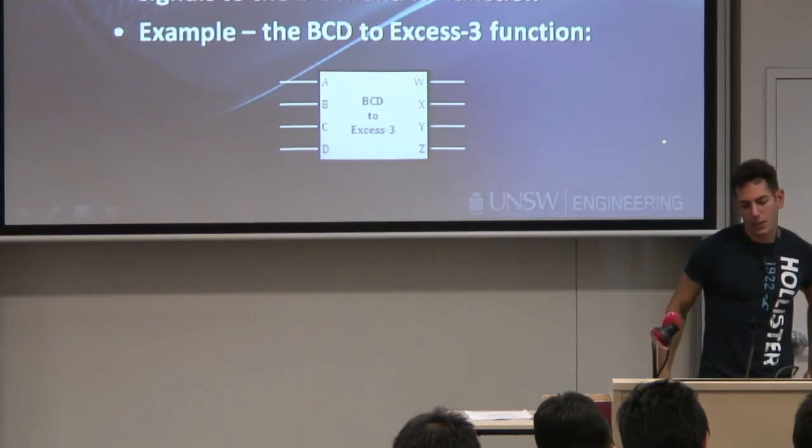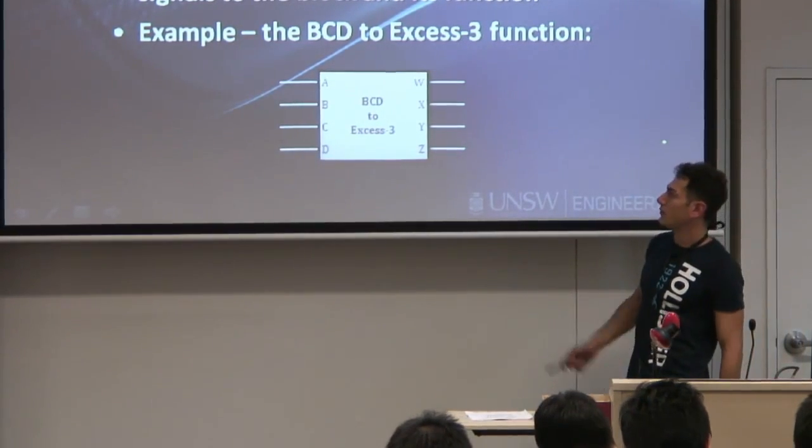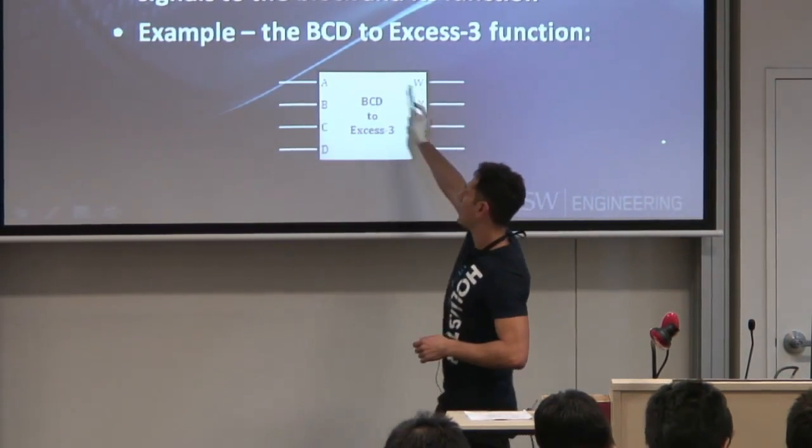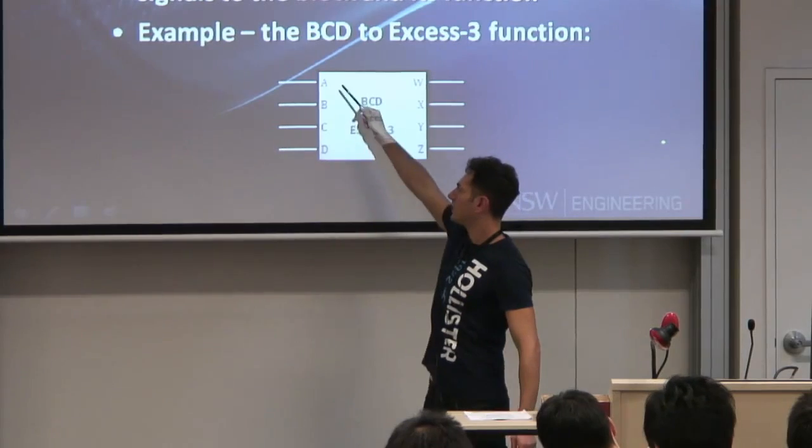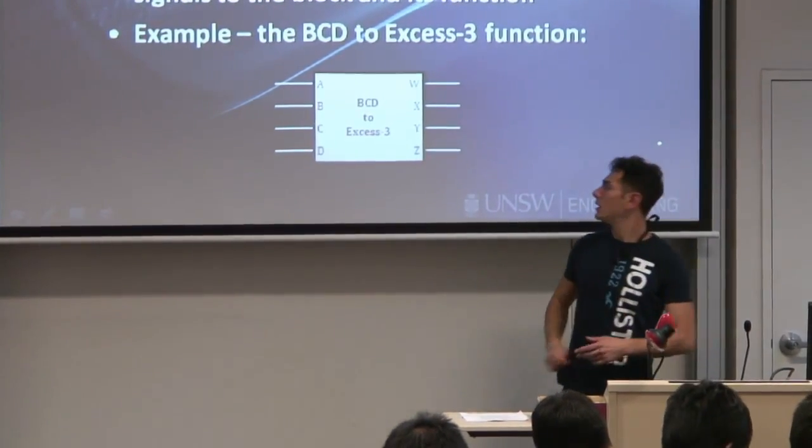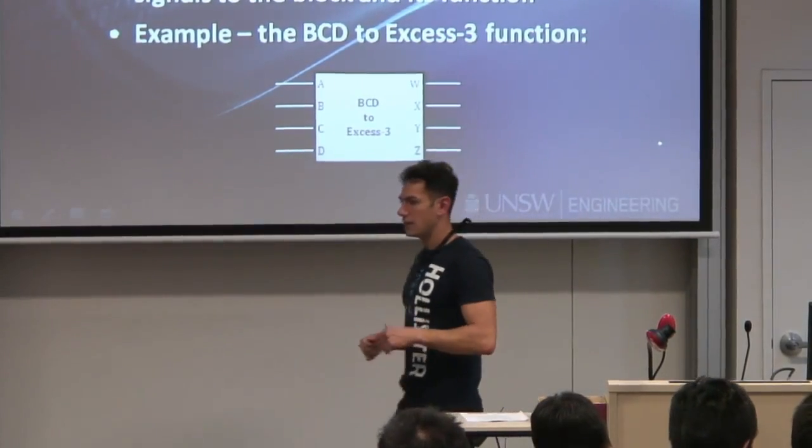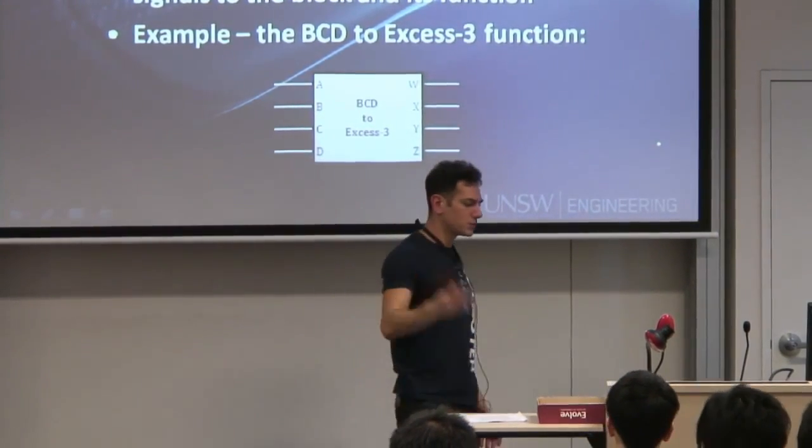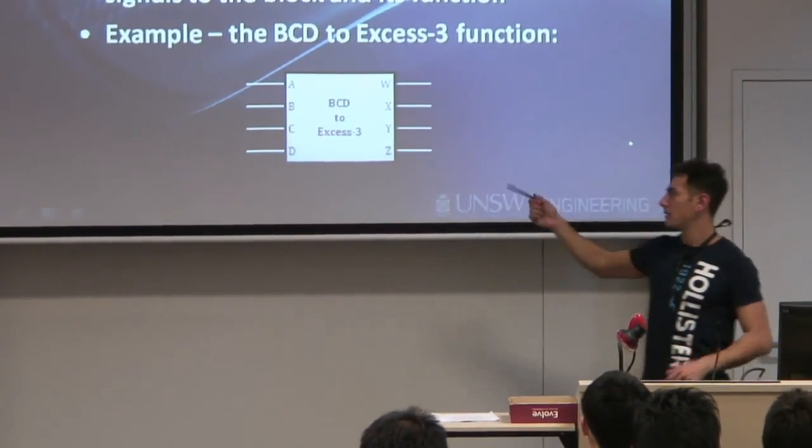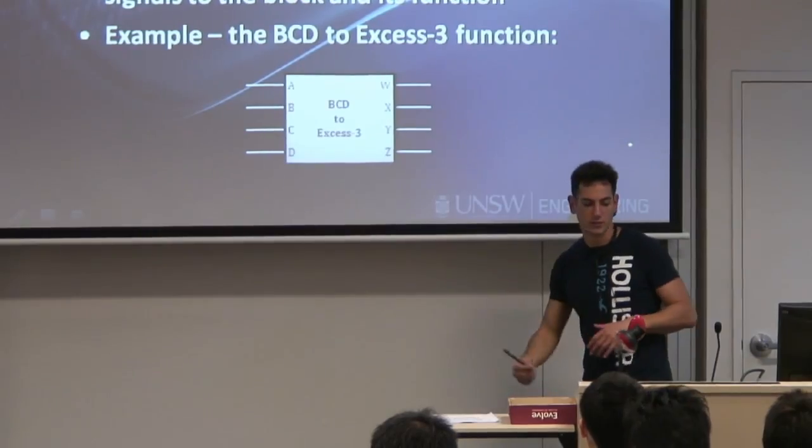So, the example of the BCD to XS3 function that we implemented before, we might take the circuit, implement it, surround it by a black box, say the inputs are A, B, C and D, which are the BCD code. The outputs, W, X, Y and Z are the XS3. And the functionality of these blocks for whomever wants to use it out there is pretty much BCD plus 3. So, BCD to XS3.